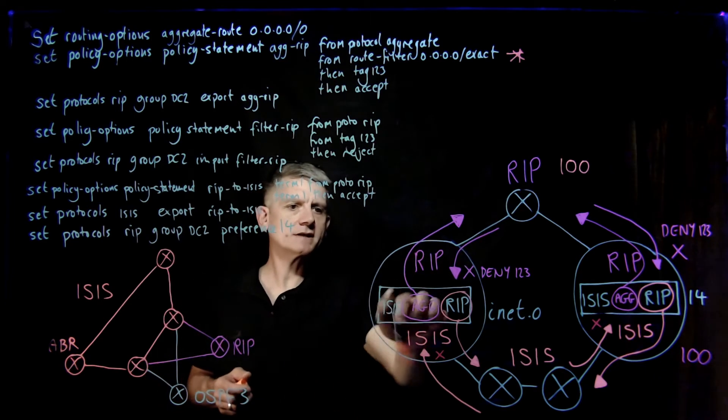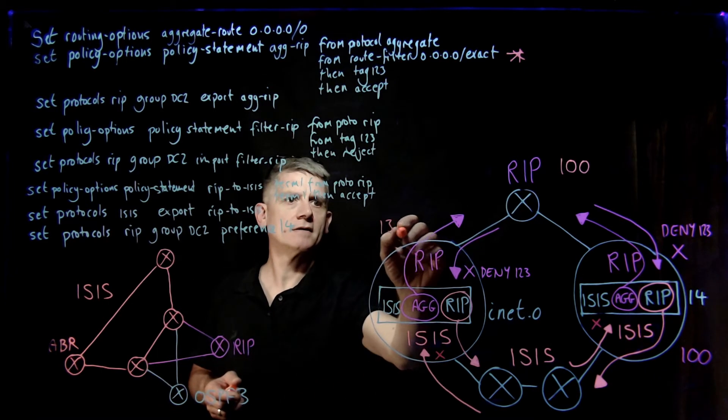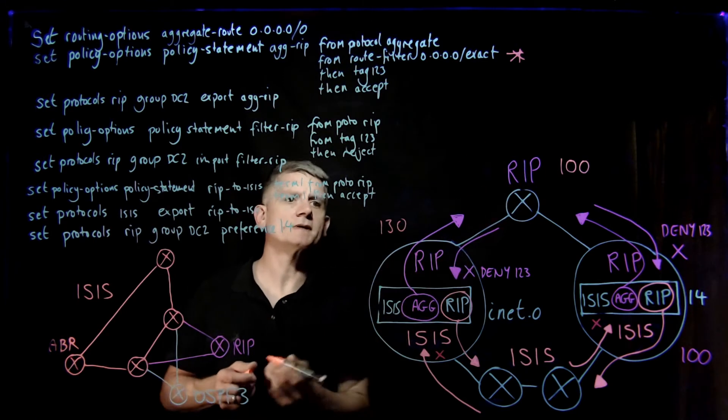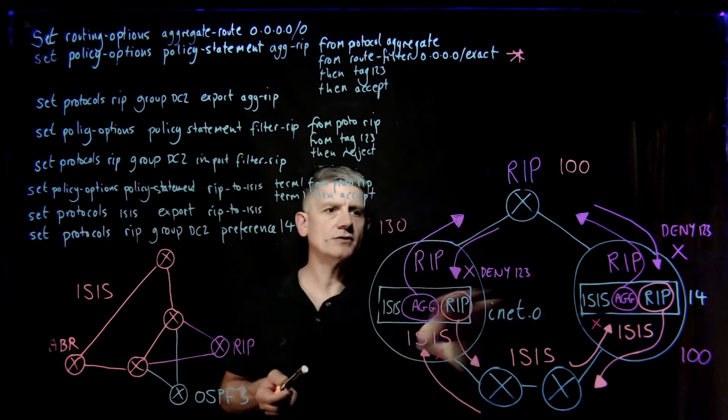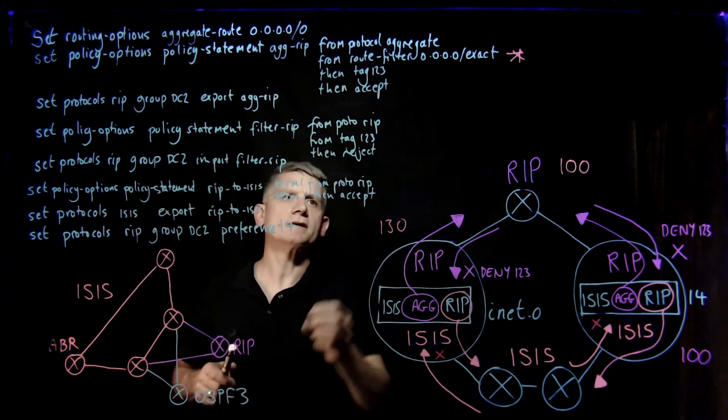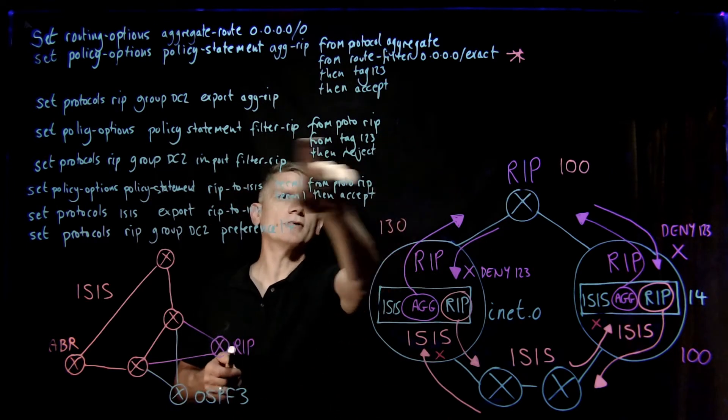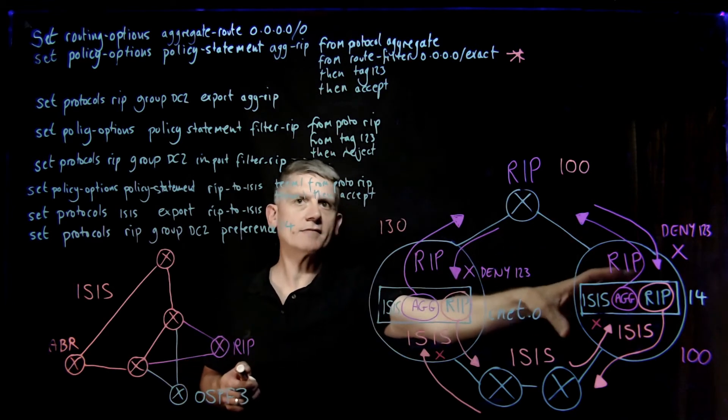Of course, it's going to start with an administrative distance of 130. It's going to be flying out RIP as 100. If it was to go through on the other side, the aggregate could not defend itself. It's set too high. And so what we're going to do is we're going to do an import filter on the RIP on the other ASBR.